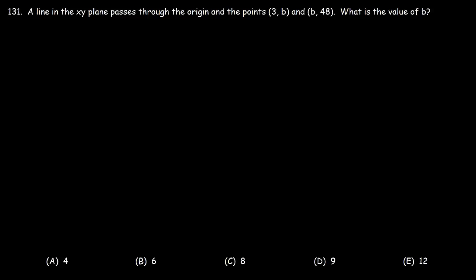Number 131. A line in the xy plane passes through the origin and the points 3 comma b and b comma 48. What is the value of b? So what do you think we need to do in this problem? Go ahead and try it. Now, a key expression is the fact that this line passes through the origin. So we have an additional point, 0 comma 0. Now what we're going to do is calculate the slope between the first two points and also between the last two points.